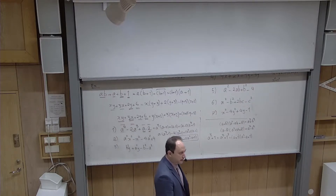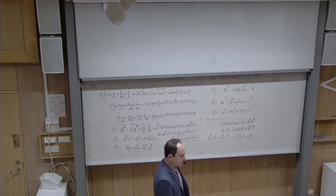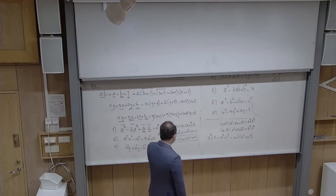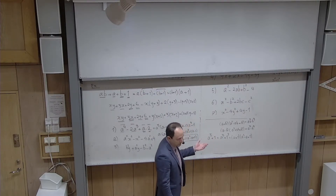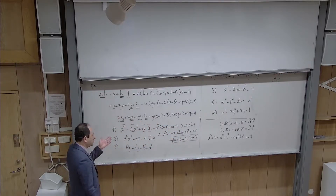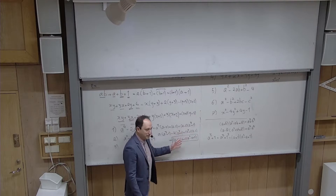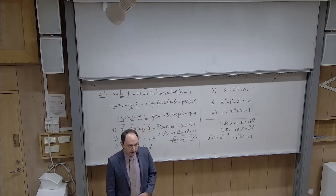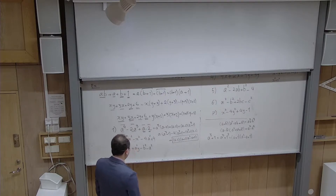For problem 5: a² − 2ab + b² − 4. Here it's better to take the first three terms together. a² − 2ab + b² is the squaring rule — it becomes (a − b)². Then you have (a − b)² − 4, which is (a − b)² − 2². Your eyes should recognize the conjugate pattern: this becomes ((a − b) − 2)((a − b) + 2), i.e., (a − b − 2)(a − b + 2).